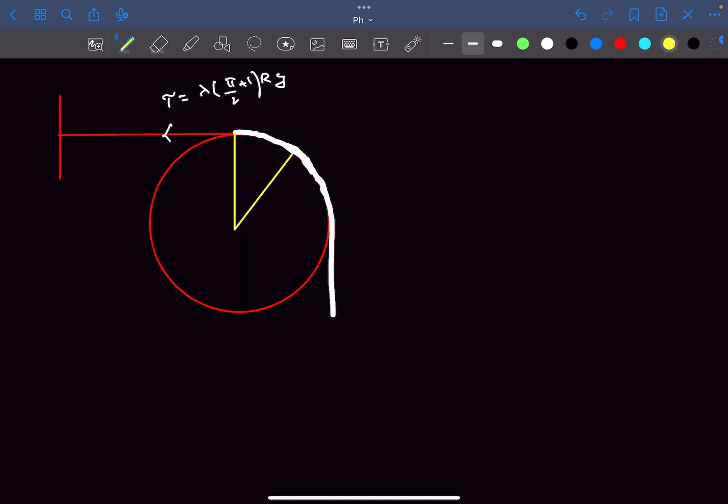Now let's take an element on the rope at an angular position theta with angular width dθ. The tension here is T, and in the direction of increasing theta the tension is T + dT. If I shade the element with red, the weight of this element acts vertically downwards with magnitude lambda R dθ g.